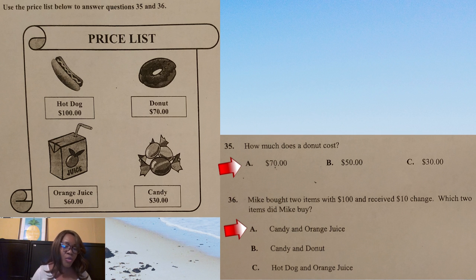Use the price list below to answer questions 35 and 36. So, we have hot dog, $100, donut, $70, orange juice, $60, and candy, $30. Question 35: How much does a donut cost? $70, option A. It's right there at the top of the list. Question 36: Mike bought 2 items with $100 and received $10 change. Which 2 items did Mike buy? So, the first thing the child needs to do is to realize that if Mike got back $10 change, that means that he spent $90. So, let's look at the price list to see what 2 items would come together for $90. It would have to be orange juice and candy. Because the orange juice is $60 and candy is $30.